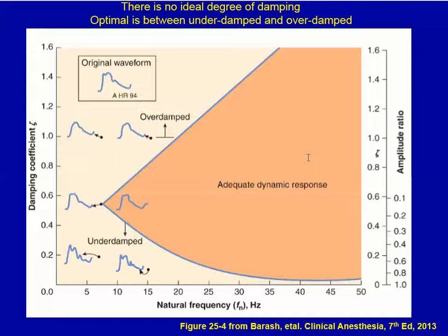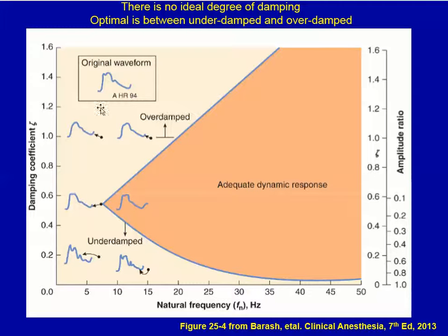This slide, taken from the latest edition of Barash, shows the range of optimal damping, which is influenced by the natural frequency. If the damping coefficient is too low you get an under-damped system; if it's too high you get an over-damped system. This triangle identifies the proper damping coefficient for various natural frequencies.